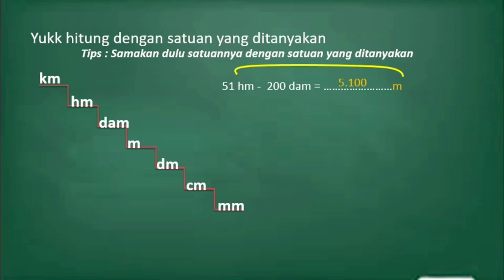Yang kedua adalah 200 dekameter, nilainya berapa meter? Dari dekameter ke meter turun satu tangga, berarti dikalikan dengan 10. Sehingga hasilnya 200 dikali 10 adalah 2.000. Karena dikurangi, berarti kita kurangi. 5.100 meter dikurangi 2.000 meter hasilnya adalah 3.100 meter.